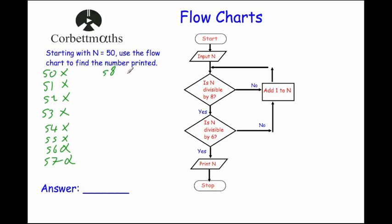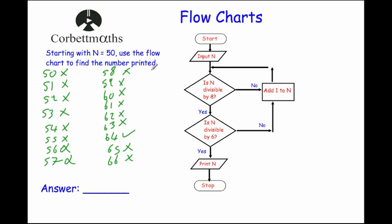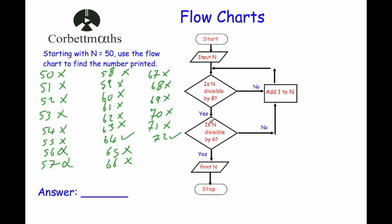We continue looping through 65, 66, 67, 68, 69, 70, 71 — none divisible by 8 — until we reach 72. Is 72 divisible by 8? Yes it is. Is 72 divisible by 6? Yes it is — it's 12 times 6. So we go down for yes and it says print n. So we print 72 and then we stop. That's the second example done.